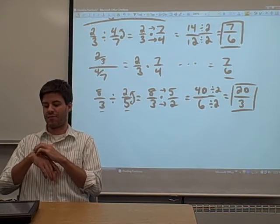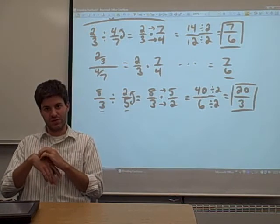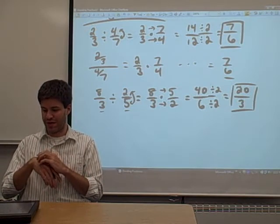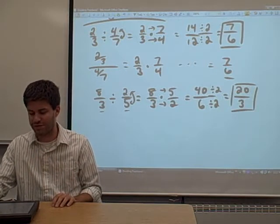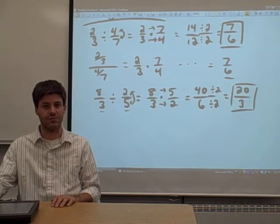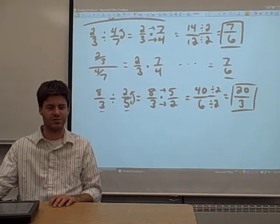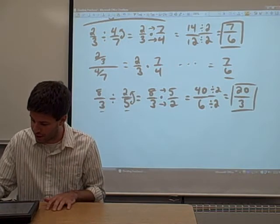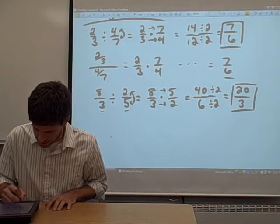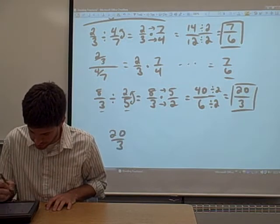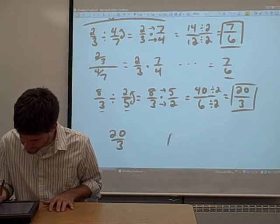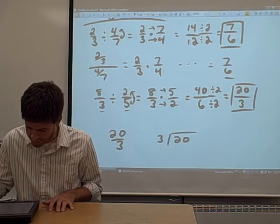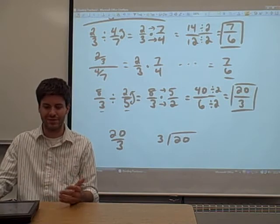Now one more note to make. This is an improper fraction. So on the Accuplacer test, I've heard that a lot of times they want improper fractions converted to mixed numbers. And we did this in the previous video. I think the second video on the website. But just as a note, 20/3, you may want to change it to a mixed number. So let's just do it real fast. A little bit of review. You take the 20. You divide it by 3.